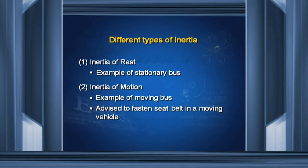The second type is inertia of motion — if an object is in the state of motion, it tries to remain in motion. For example, if you are standing in a moving bus and the driver suddenly applies brakes, your lower body slows down, but the upper body, which was in motion, continues to be in motion. As a result, you may fall in the forward direction. This is the reason you are advised to fasten your seat belt in a moving vehicle.